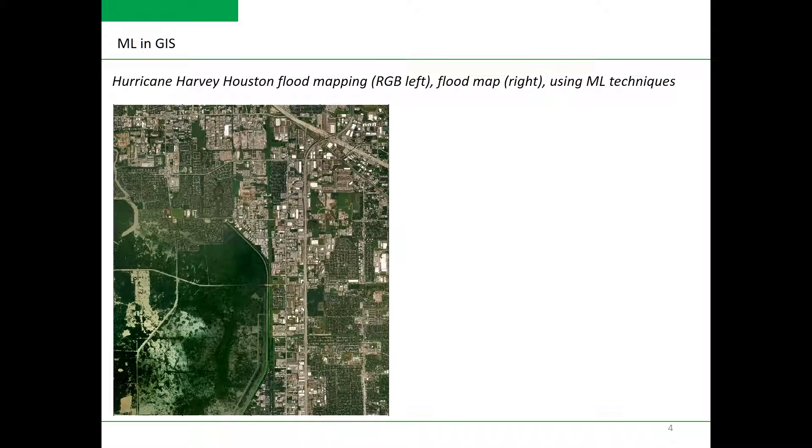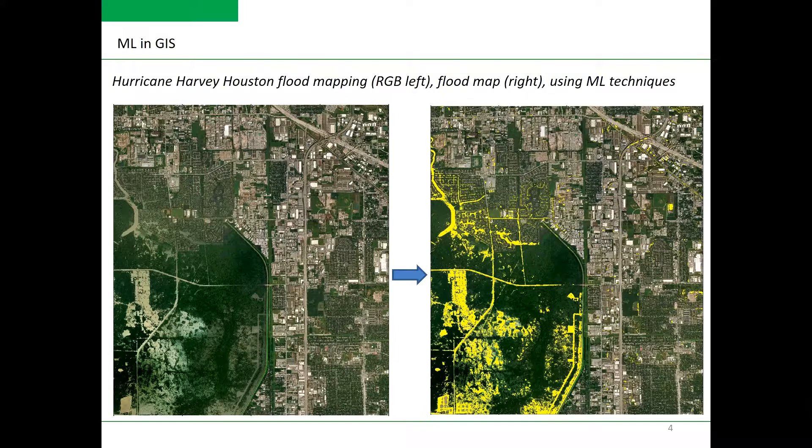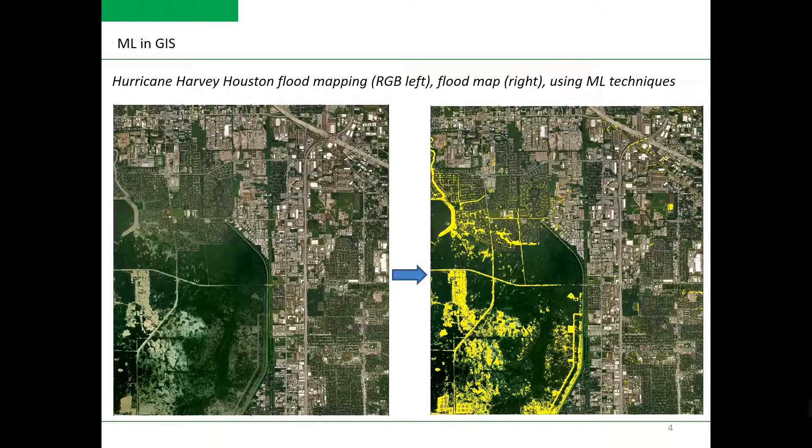Here is another example of using machine learning algorithms in GIS. This is a flood map on the right of Houston that was derived from very high resolution image on the left using machine learning techniques. This is just to give you some examples and give you a feeling of the capabilities of what could be done with machine learning in GIS.